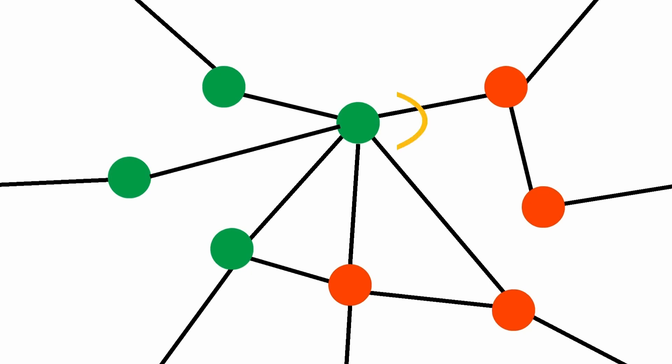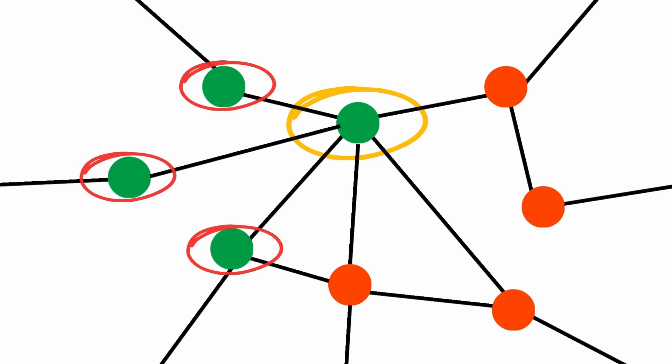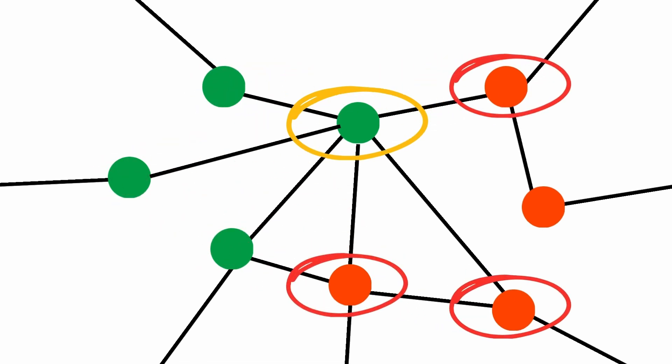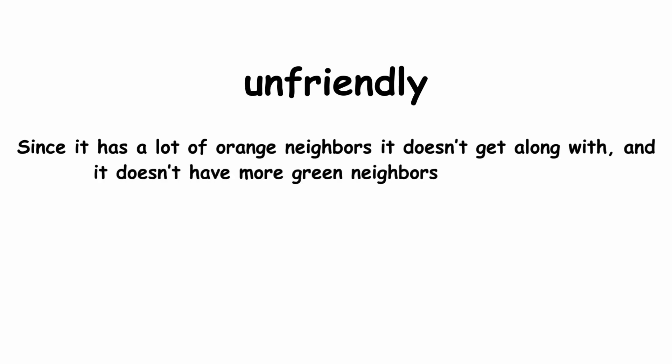Let's consider a green vertex and count how many green neighbors it has. Let's say it's three. Now we'll count how many orange neighbors it has. Suppose it's three again. This vertex could be called unfriendly, since it has a lot of orange neighbors it doesn't get along with, and it doesn't have more green neighbors to compensate.